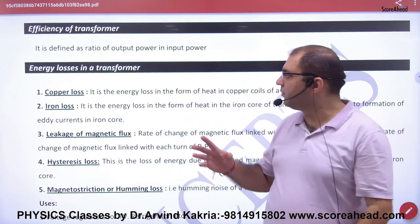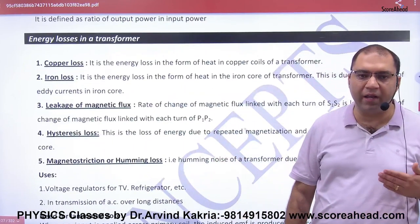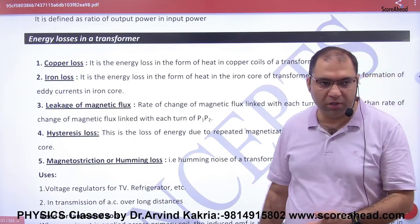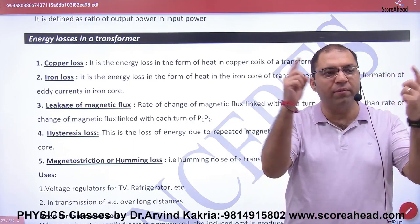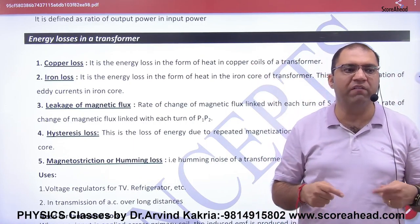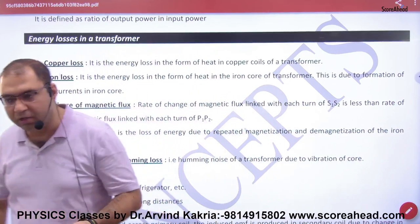The first loss of a transformer is copper loss. Because in the transformer there are copper wires, and there is a current flowing through them. The copper wire becomes warm, and this heat loss in the copper wire is known as copper loss.